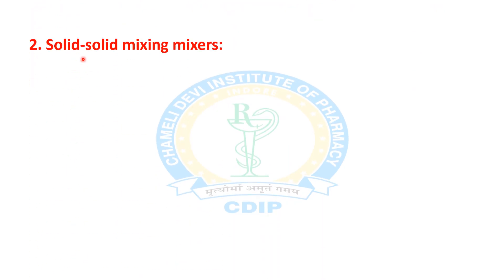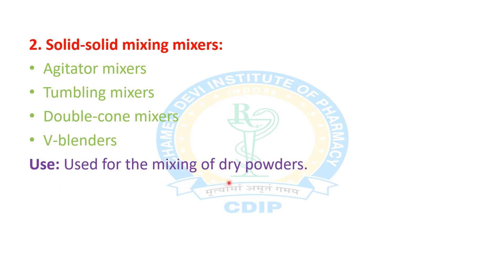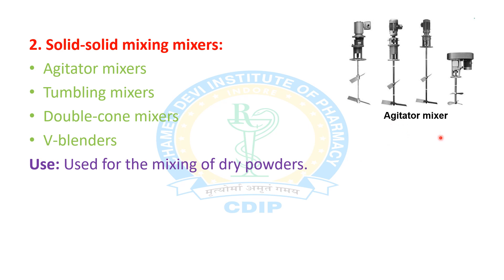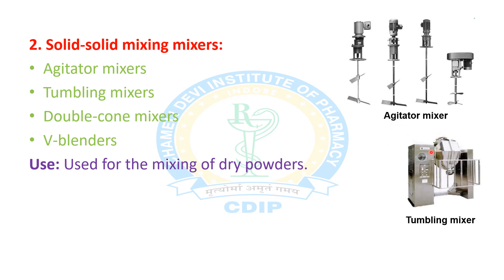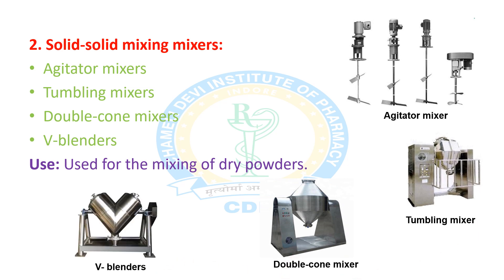For solid-solid mixing, the mixers used are agitator mixers, tumbling mixers, double cone mixers, and V-blenders. These types of mixers are used in the mixing of dry powders. The figures shown include an agitator mixer, tumbling mixer, double cone mixer, and V-blender.